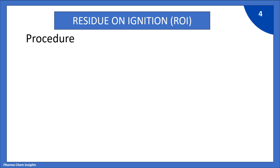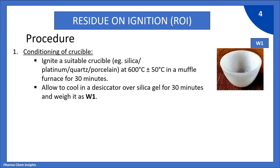Now let us see the procedure. First is Conditioning of the Crucible. Ignite a suitable crucible — e.g., Silica, Platinum, Quartz, or Porcelain. According to your requirement, take any suitable crucible and ignite at 600 degrees Celsius in a muffle furnace for 30 minutes. After that, allow the crucible to cool in a desiccator over silica gel for 30 minutes, and then weigh it as W1.